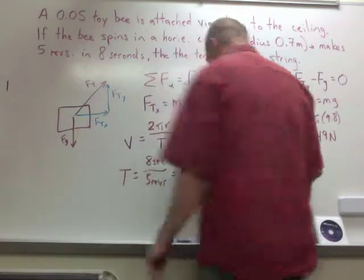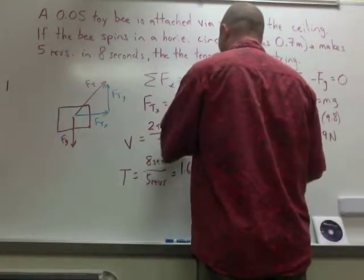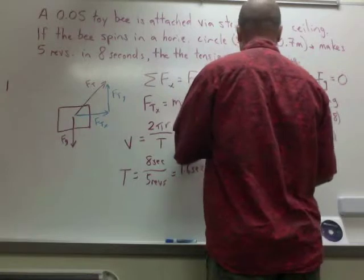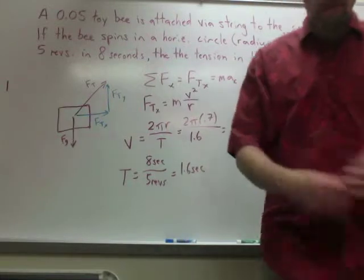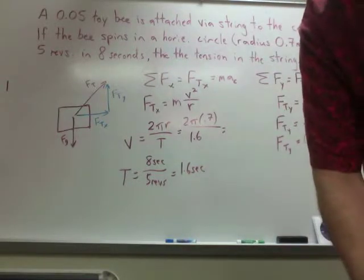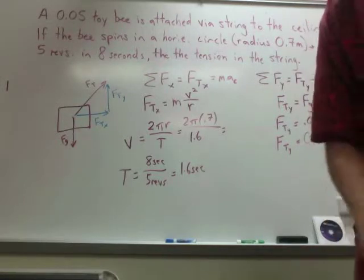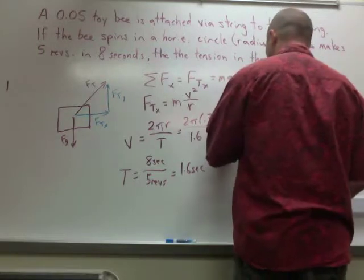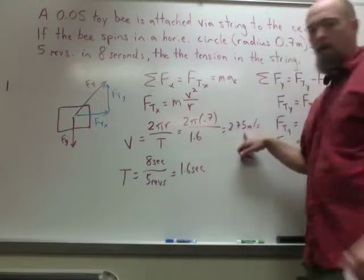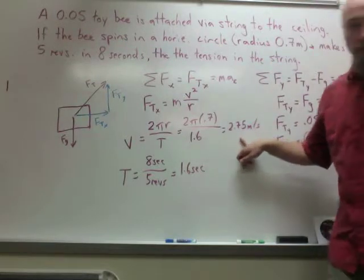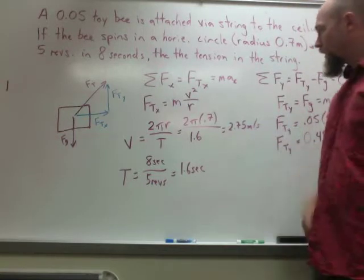So, it takes 1.6 seconds per revolution. That's your period. If I plug stuff in, I'm going to get 2π times 0.7 over 1.6. If I do the math, 2π times 0.7 divided by 1.6, you get 2.75 meters per second. So, roughly, the bee is traveling about 5.5 miles an hour. So, yeah, that could happen.